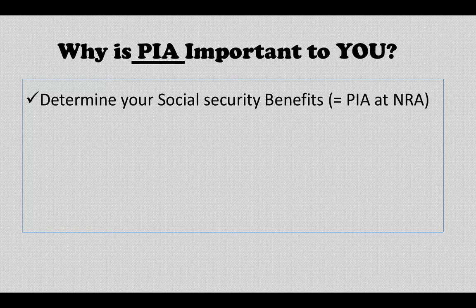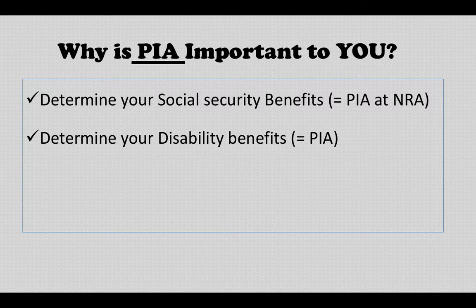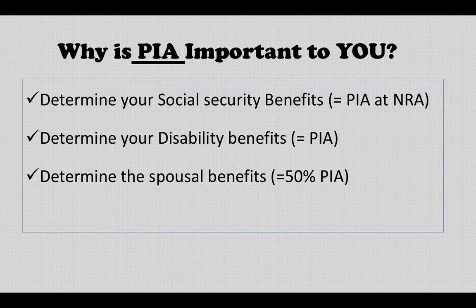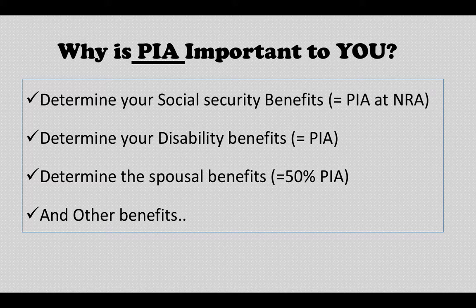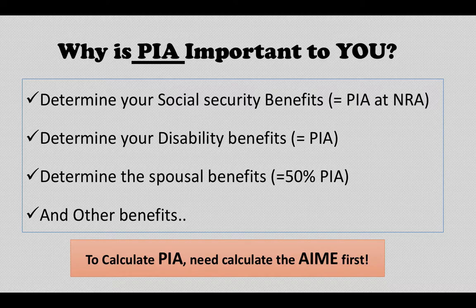PIA is your base benefit at your normal retirement age. It also determines your disability benefits — on your Social Security statement your disability benefit should equal your PIA. It also determines spousal benefits: if your spouse is taking spousal benefits, it's 50% of your PIA. So PIA is very important, along with some other associated benefits.